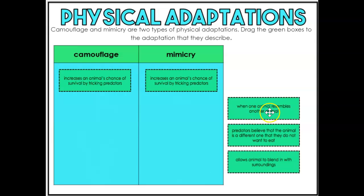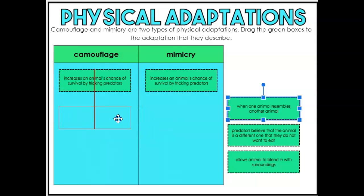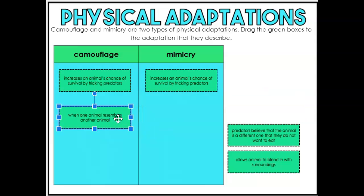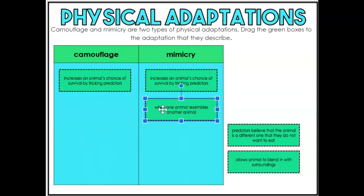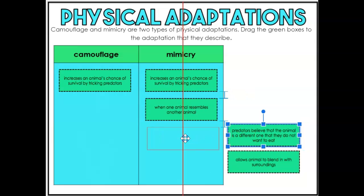The next one is when one animal resembles another — that is mimicry, when it's mimicking another animal. The next one is: predators believe that the animal is a different one that they do not want to eat. That is also mimicry.